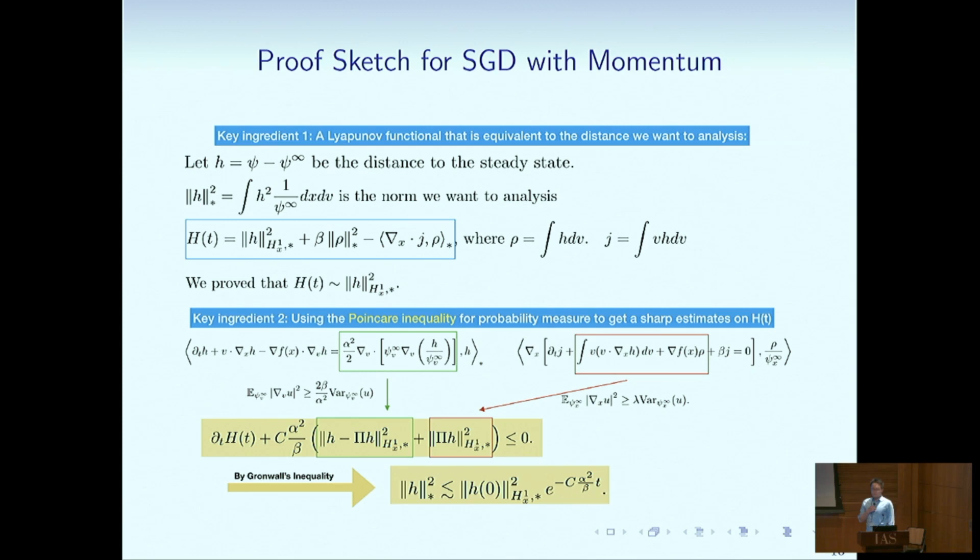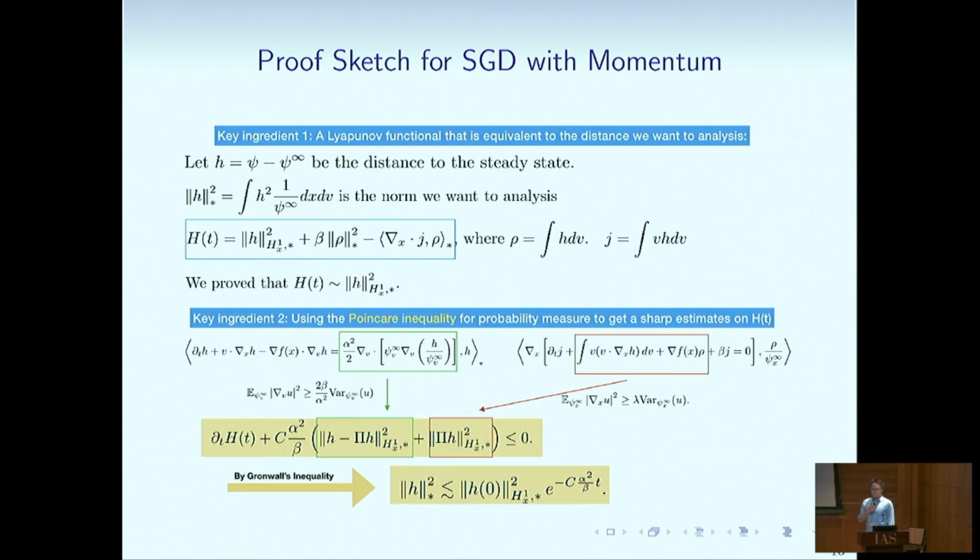Here is a quick proof sketch. To do such SDE type of analysis, we do two steps. First, define some new energy norm to trace the SGD update, to trace the trajectory. And then using the Poincaré inequality, which can help to write down the explicit convergence rate.